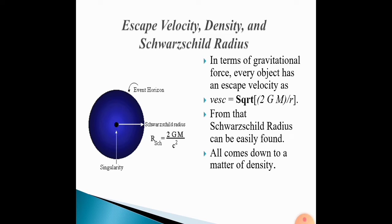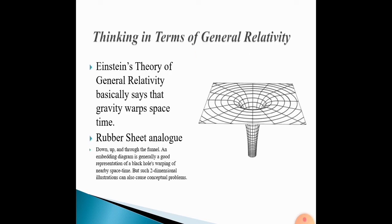Thinking in terms of general relativity. Einstein's theory of general relativity basically says that gravity warps space-time. Rubber sheet analogy: down, up, and through the funnel. An embedding diagram is generally a good representation of a black hole's warping of nearby space-time, but such two-dimensional distribution can also cause conceptual problems.